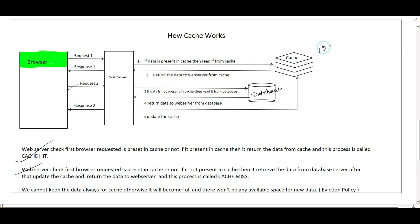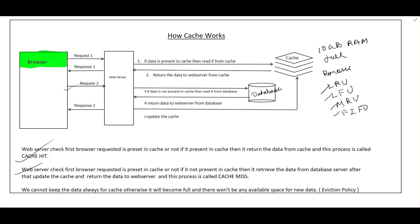Suppose this cache has 10 GB of RAM. Whenever data is not present in the cache we update the cache very frequently, and eventually the 10 GB becomes full. When the requested data is not in the cache but the cache is full, how can we store newer data? To overcome this problem we use eviction policies — we remove some data from the cache to make space for new data. Different eviction policies include LRU (Least Recently Used), LFU (Least Frequently Used), MRU (Most Recently Used), and FIFO (First In First Out).